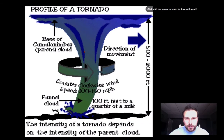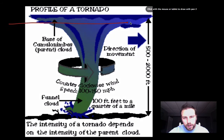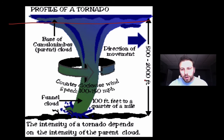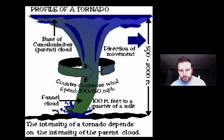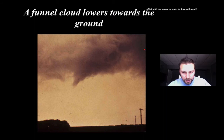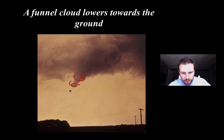From the side view, we have the base of the cloud here and this low-pressure system. Notice the counterclockwise movement, and how this system moves — it's roughly 500 to 2,000 feet tall depending on the system itself. Here's the funnel cloud beginning to lower down in this region. We have this low pressure, this spiraling air eventually making its way towards the ground.